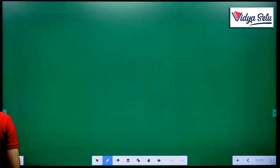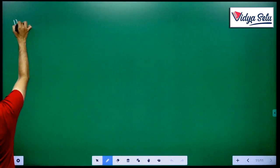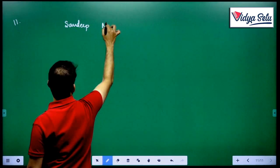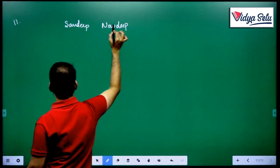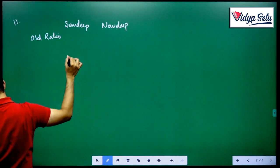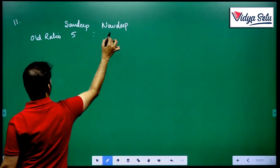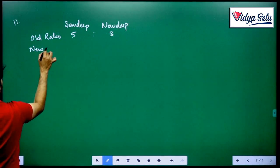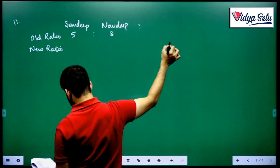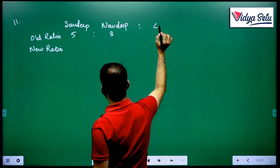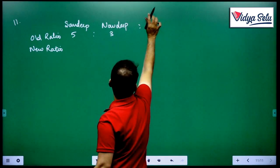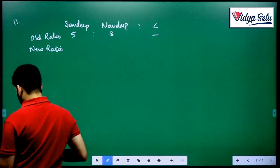The partners are Sandeep and Navdeep. Old ratio is given as 5 is to 3. New ratio is also given. The new partner's name is C, and the new ratio is 4 is to 2 is to 1.